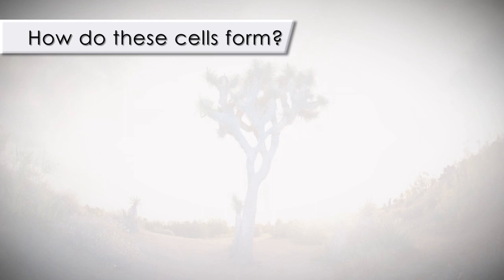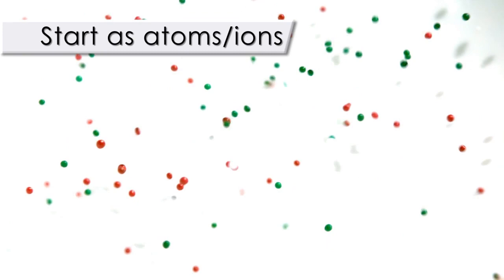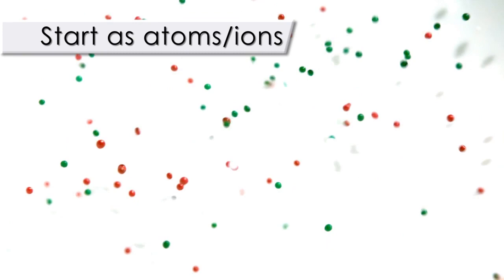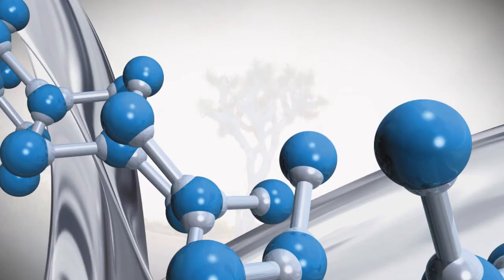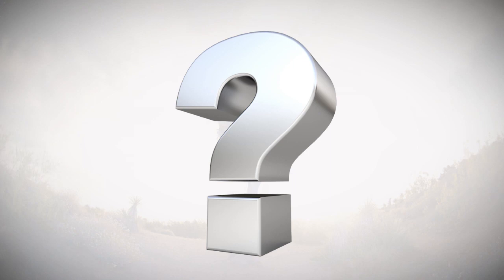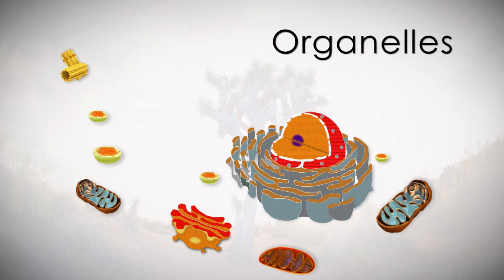How do these cells form? It's important to know, according to science at least, that they started out as atoms or ions such as the ones found in the protoplasm. Then they became molecules, a composite of atoms or ions exchanging nutrients such as water, sugar, and proteins. Then under a scientifically unknown process of life, organelles were formed, each with a specific assigned function, such as the mitochondria and the nucleus. The organelles became the essential components of the cell.